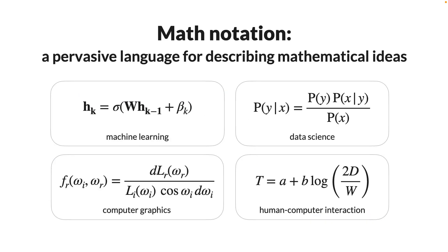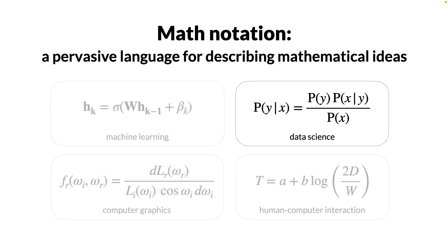Math notation is a pervasive language for describing mathematical ideas. It is used across domains to express mathematical ideas formally, from machine learning to data science, computer graphics, and human-computer interaction.